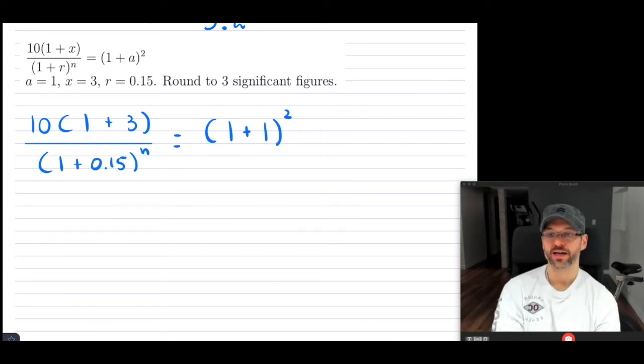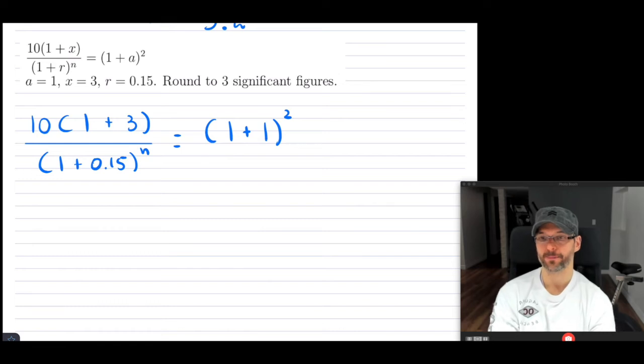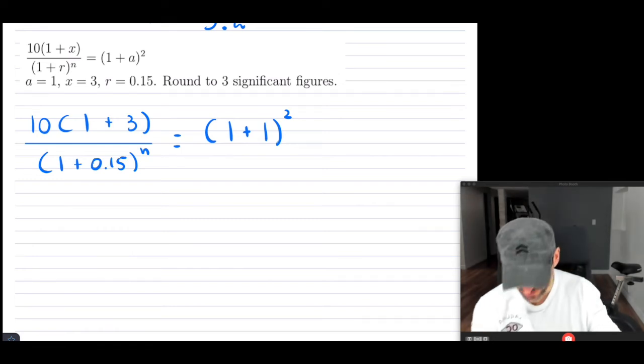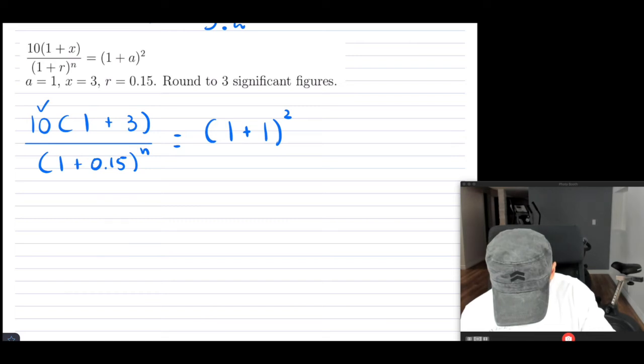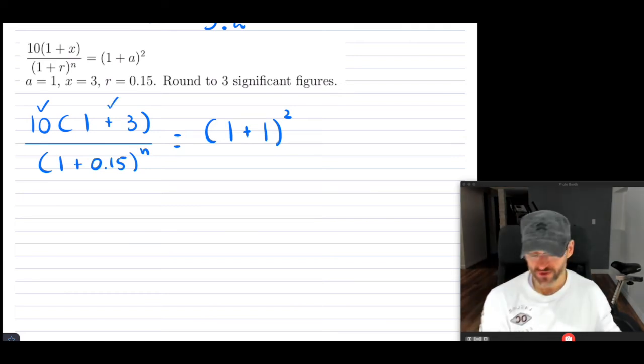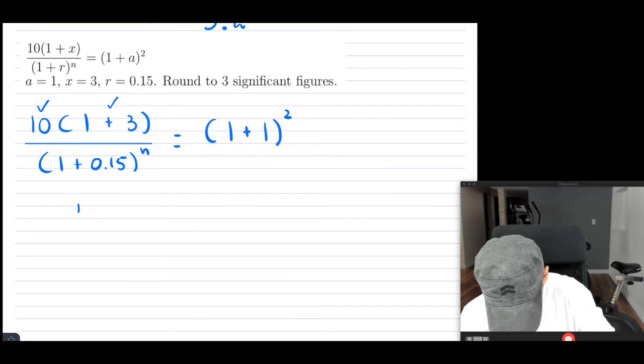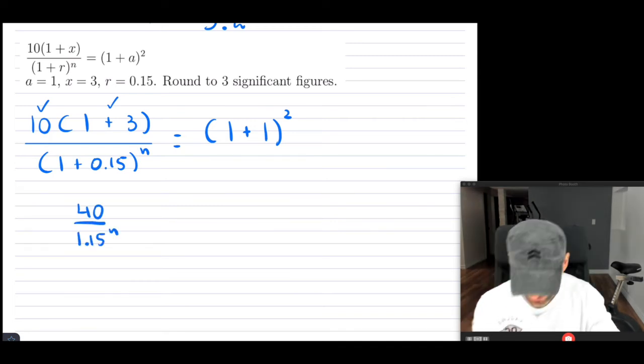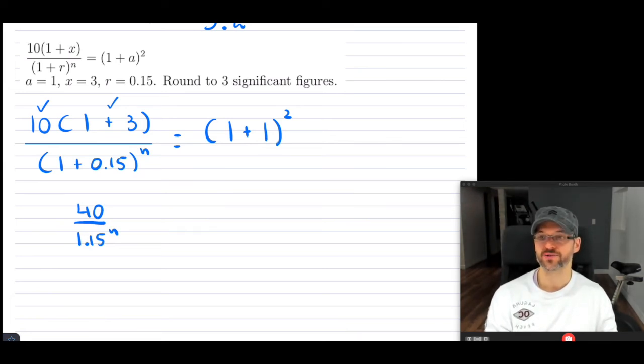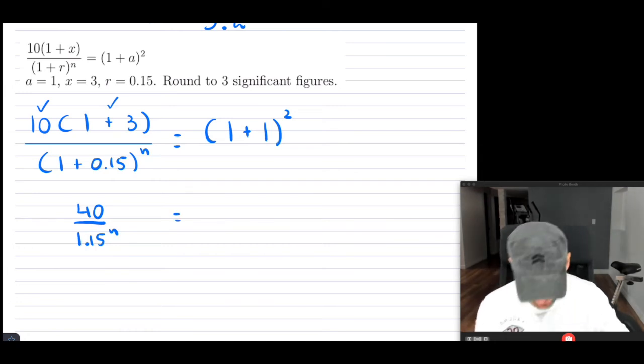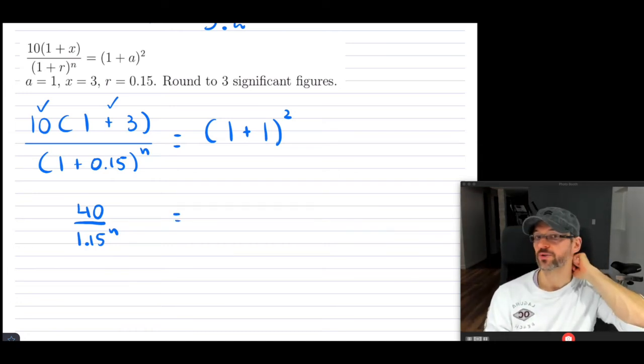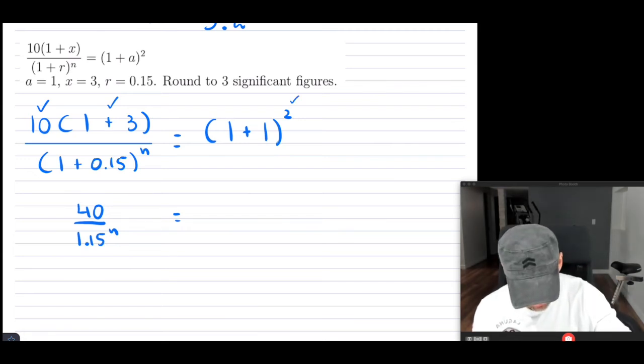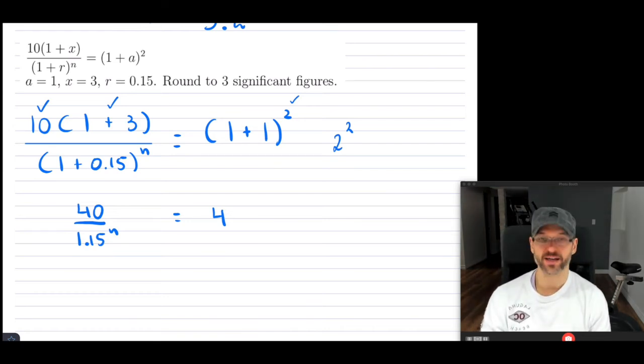So now that we have this, I have my n in the denominator. I don't like that, but let's first simplify everything. So I have, so this is 10. In the brackets, it's 1 plus 3. So that's 4. So 10 times 4, so this is 40, divided by, this is 1.15n, right? When I add those in the brackets, so 1 plus 0.15. And then on the right-hand side, well, this is not bad. So it's 1 plus 1, which is 2, and then 2 squared. So 2 squared, this is 2 squared, which is 4. So that's what I have there.